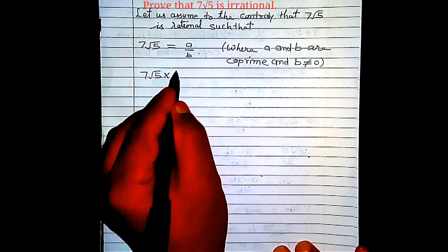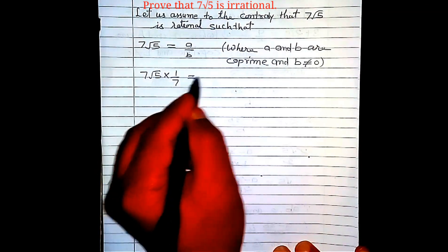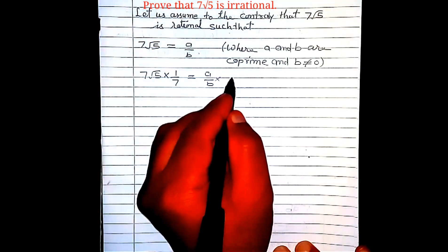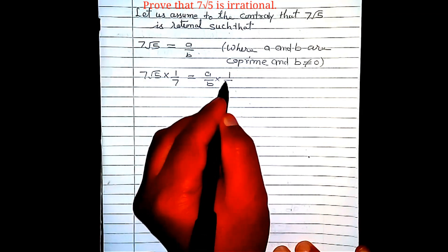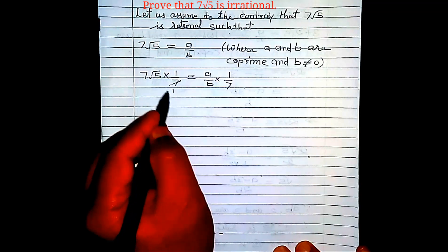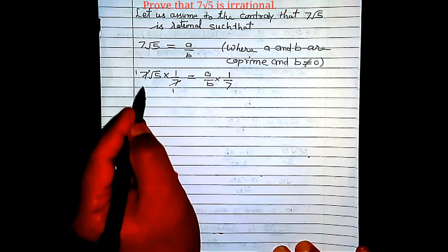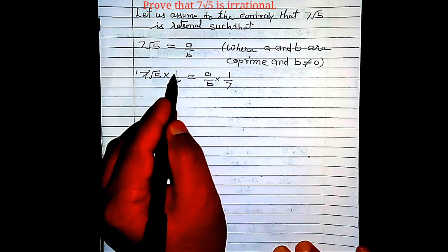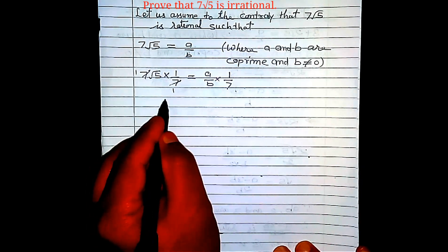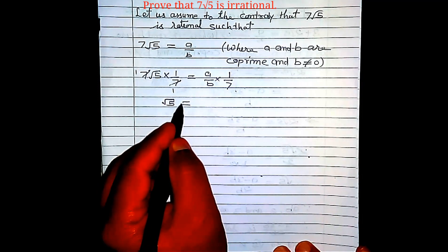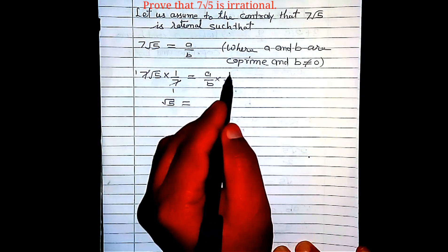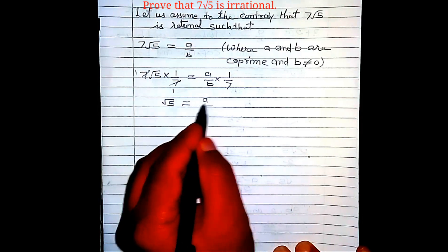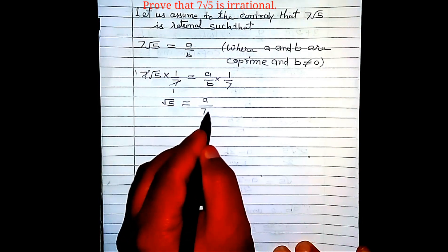7√5 multiplied by 1/7 is equal to a/b multiplied by 1/7. 7 cancels with 7, so on the left-hand side we have √5, and √5 is equal to 1 multiplied by a, which is equal to a, and 7 multiplied by b is equal to 7b.